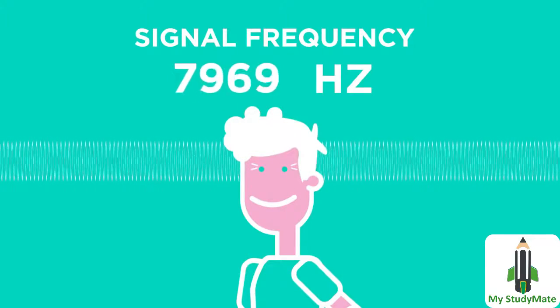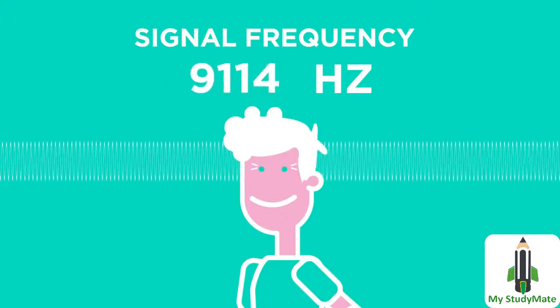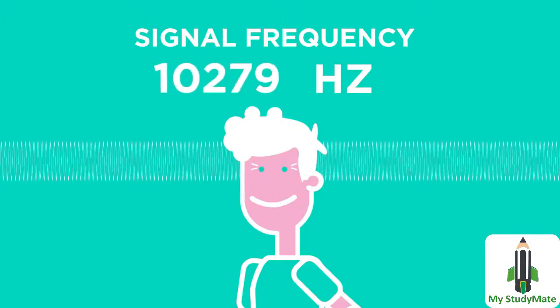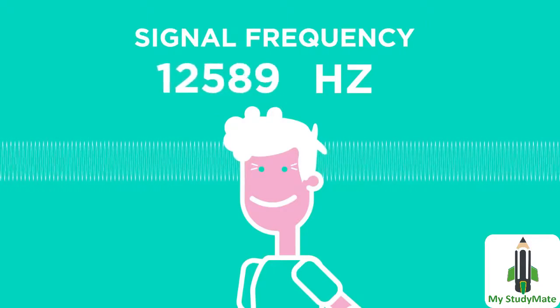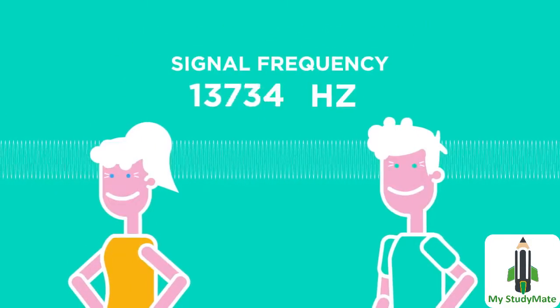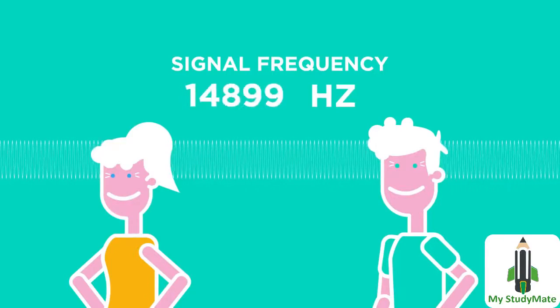A normal middle-aged adult can often only hear up to about 14,000 hertz. Men's hearing often worsens more quickly than women's, and so women can hear higher frequencies than men of the same age.